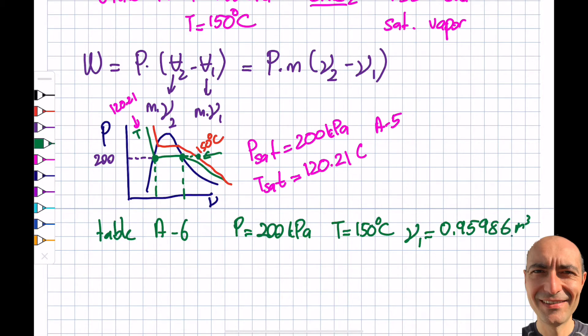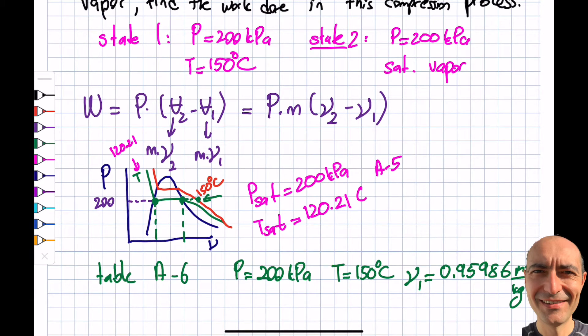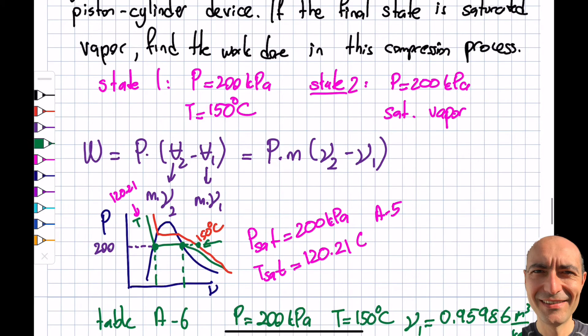I find my specific volume 1 as 0.95986 m³/kg. I was able to find it. Looking back over here, now I know this. The next question is what is V2? Actually, it's a little bit more easier this way around because I gave you the constant pressure or saturation pressure, 200 kilopascal, and I have a saturated vapor.